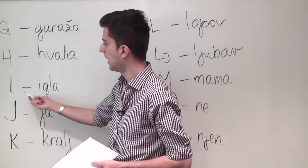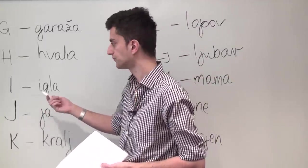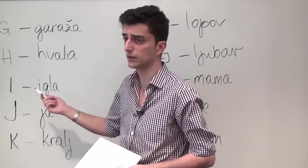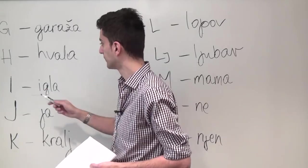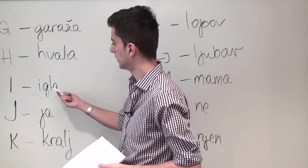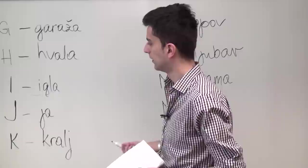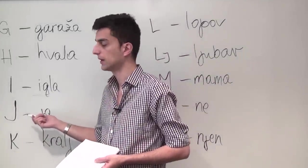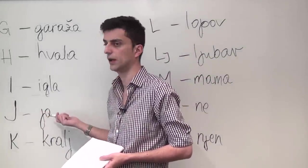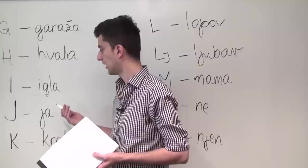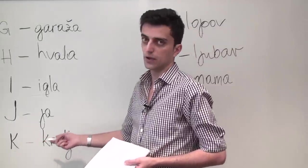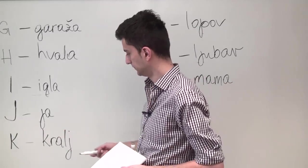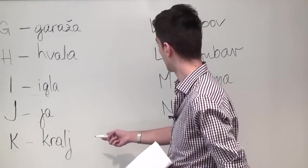Letter I is pronounced E, which can sometimes be confusing, but letter I is pronounced E and you can hear it in the word igla meaning needle. Letter J is pronounced as Y and it can be heard in the word ja meaning I or myself. Letter K is pronounced as K and you can hear it in the word kralj.